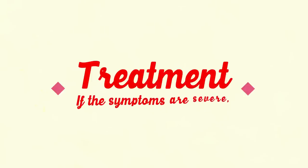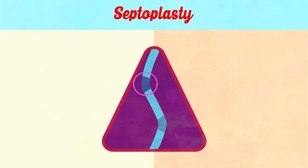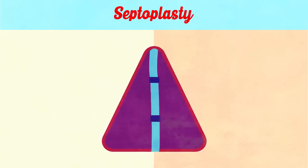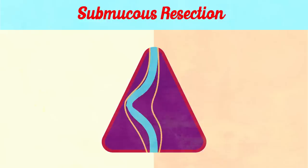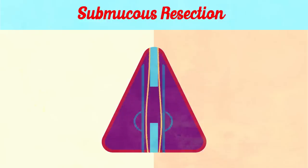Treatment: minor cases of DNS require no treatment. If symptoms are severe, then on reaching the age of 17, we can opt for septoplasty, in which the most deviated parts of the nasal septum are removed and the rest is corrected and repositioned using plastic means. A more radical form is submucous resection, in which mucoperichondrial and mucoperiosteal flaps overlying one side of the septum are lifted, most of the septum is removed, and flaps are repositioned.